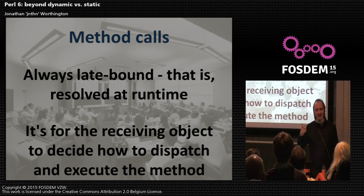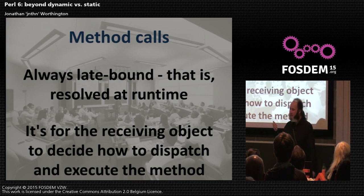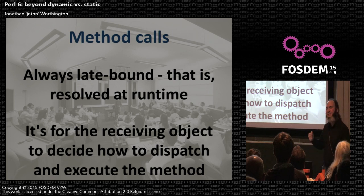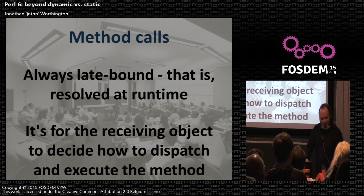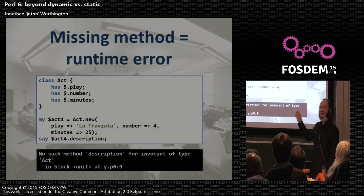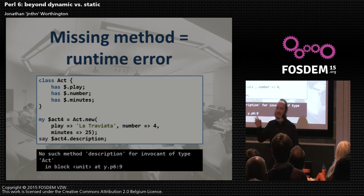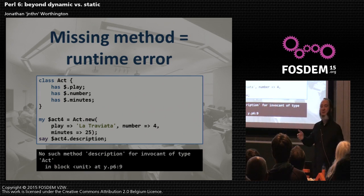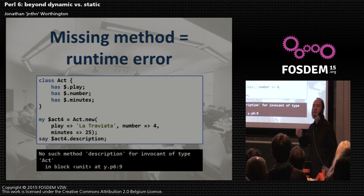Method calls in Perl 6 are late-bound — these are things resolved at runtime. It's completely up to the object that receives the method call to decide how it's going to handle it. That's very much in the spirit of the way OO works. A missing method is a runtime error — you can tell because we're not sorry about it. If it says sorry, the compiler is telling you; if it's not there, you made it to runtime. After a while you just take that for granted and it helps you understand what you need to do.